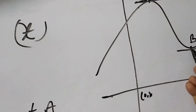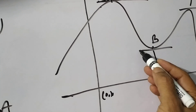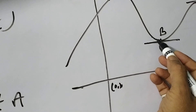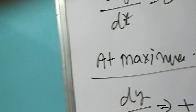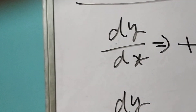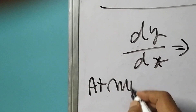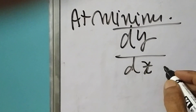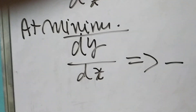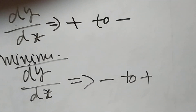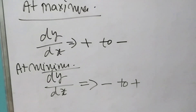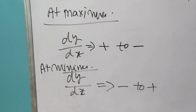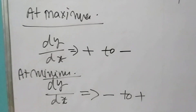At this minima point, dy by dx is zero because the tangent at this point is parallel to the x-axis. But here it is decreasing, decreasing, here zero, and then increasing. So for minima, dy by dx tends from negative to positive. This is also a lengthy process — we must calculate all these values to say whether it is negative or positive.